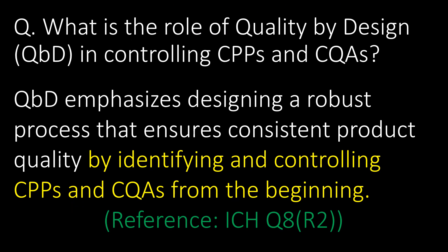What is the role of Quality by Design (QbD) in controlling CPPs and CQAs? QbD emphasizes designing a robust process that ensures consistent product quality by identifying and controlling CPPs and CQAs from the beginning. Reference guideline: ICH Q8R2.